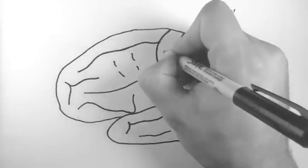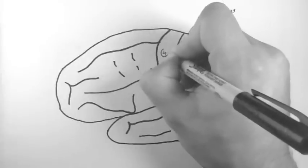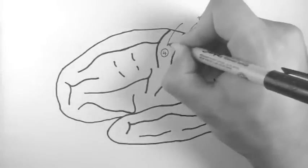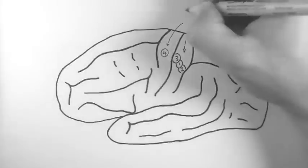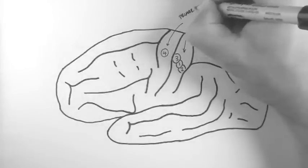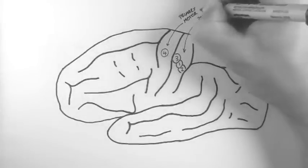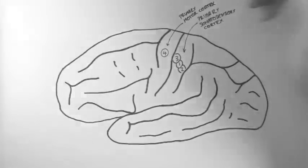Brodman area 4, in the precentral gyrus, is the primary motor cortex. This is the primary control center for movements of the body.